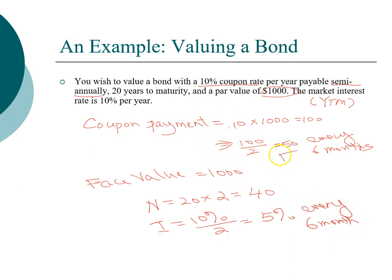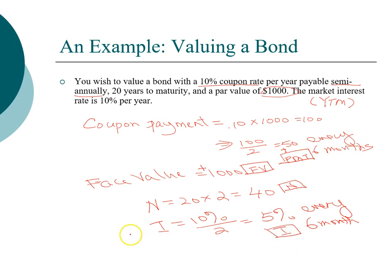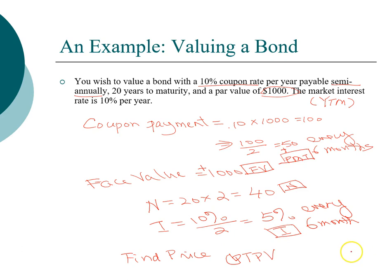Now we have all the information we need: $50 is our annuity payment, $1000 is our future value — both are inflows. If you buy a bond, you'll receive $50 every six months and also receive $1000 at maturity. N is 40 time periods and the discount rate is 5%. Go ahead and compute the present value — the price of the bond today. The answer is $1000.